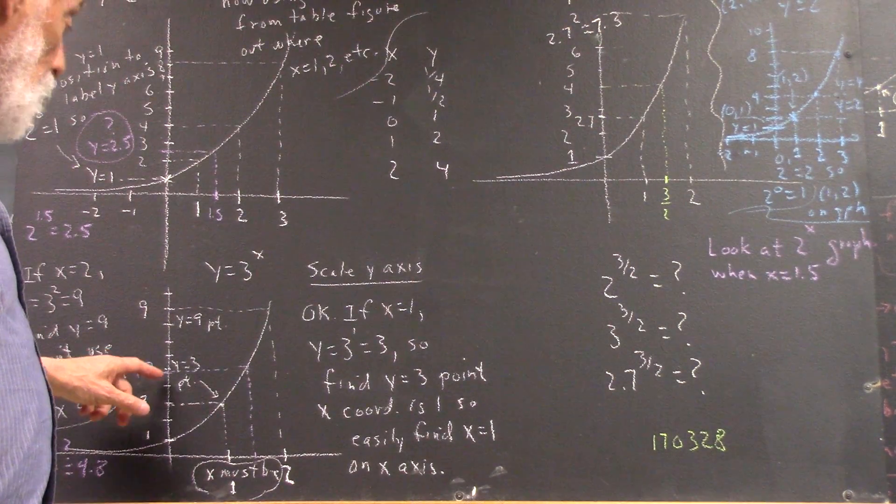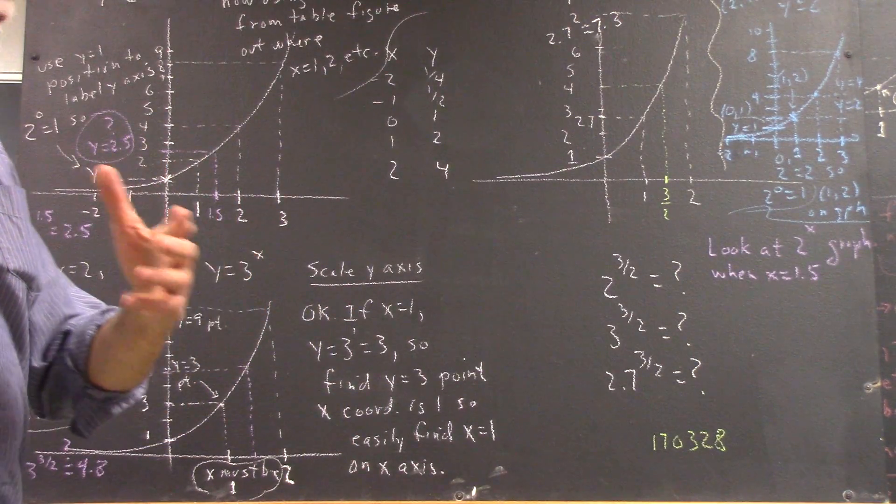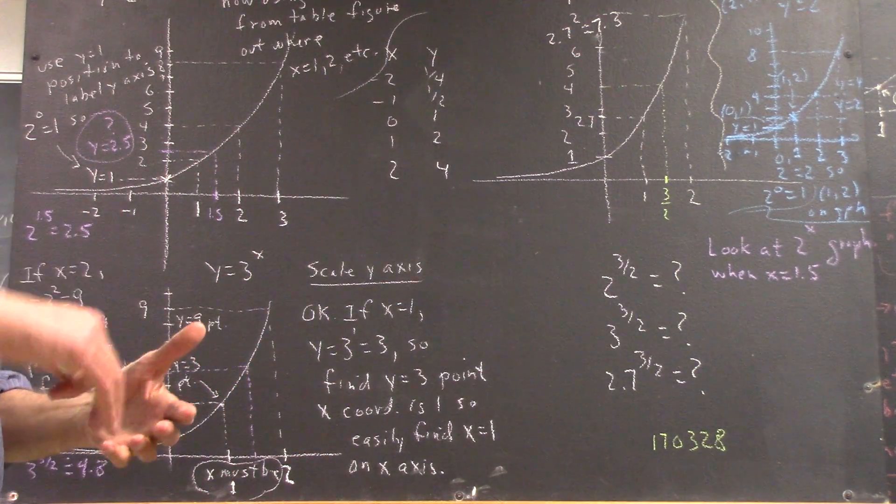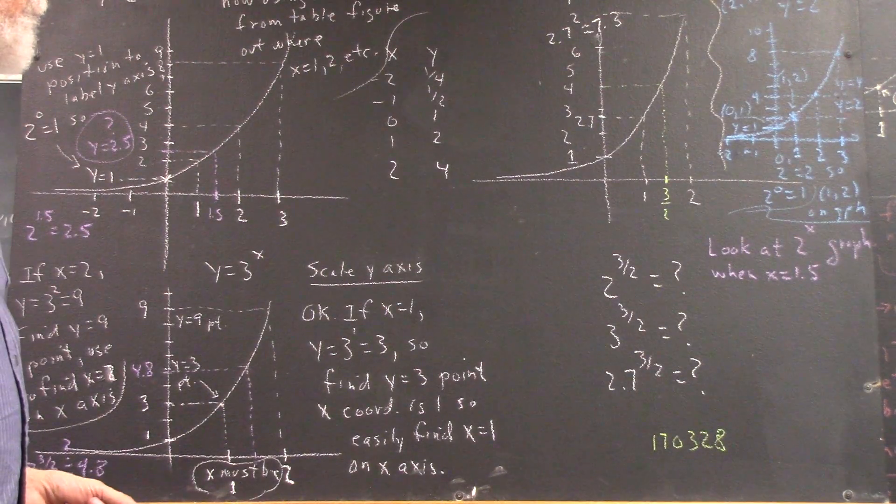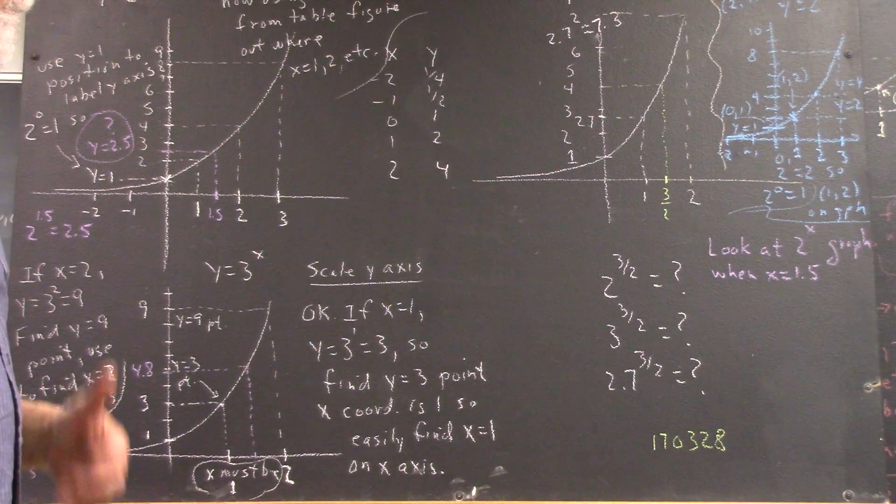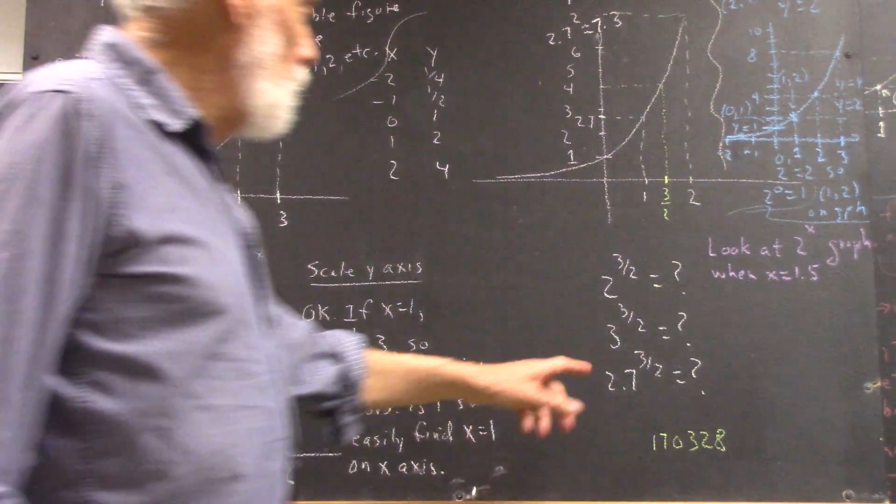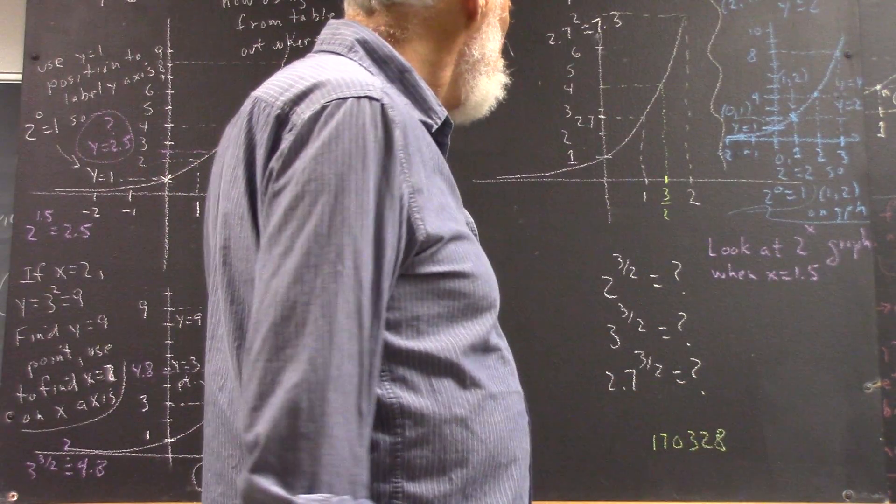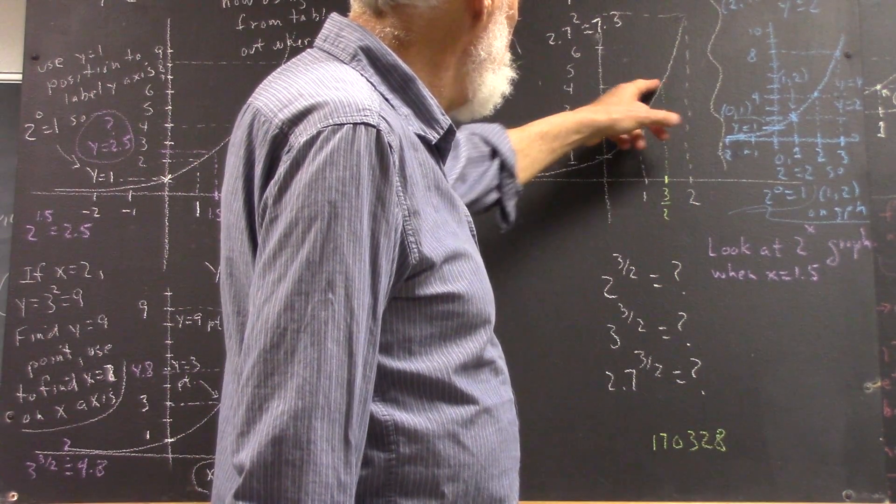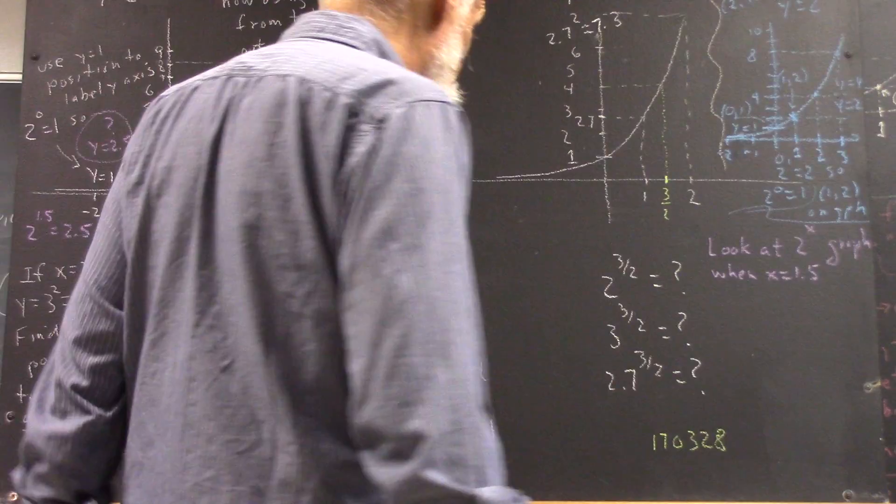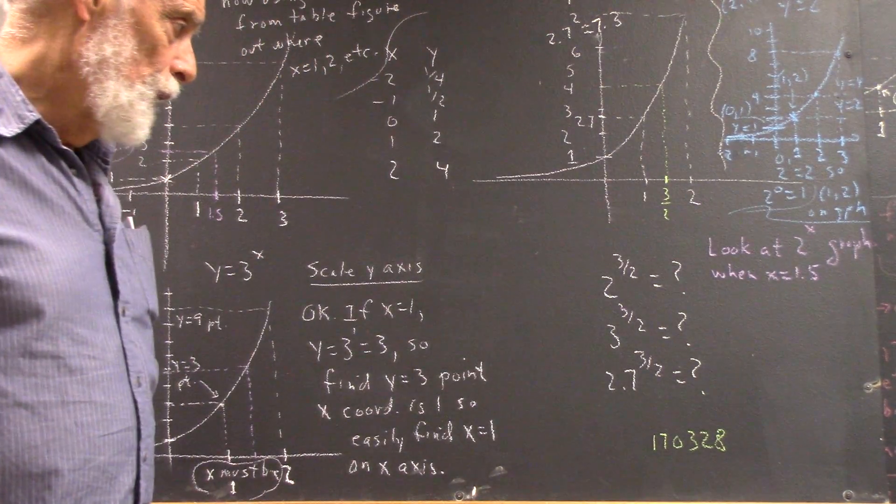Okay, 2.7 to the 3 halves. Well, here's 3 halves. We come up here. We see that gives us about 4. Is that reasonable? Well, it's reasonable, but I can do a calculation in my head. I know the square root of 2.7 is over 1.6, and 1.6 times 2.7 is more than 4.